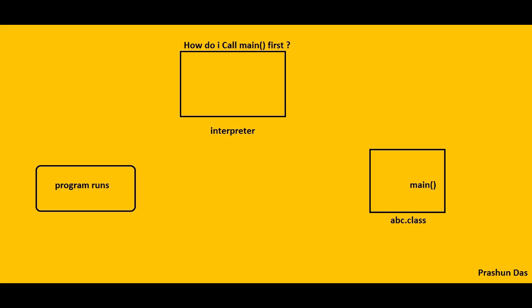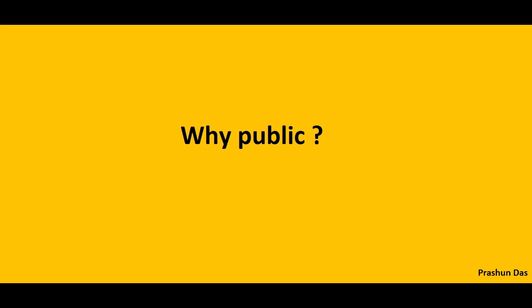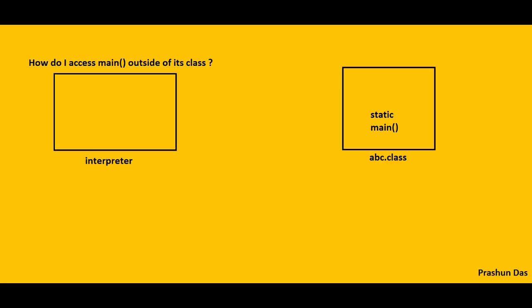In Java, the main method has to be called first. Hence the Java interpreter will call the main method before any objects of the class are made, and this is the reason the main method has the keyword static — since static methods can be invoked without the need for creating an object of a class.